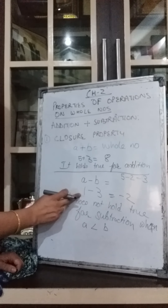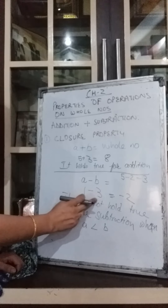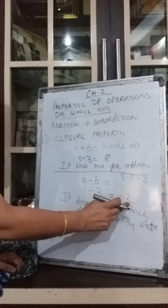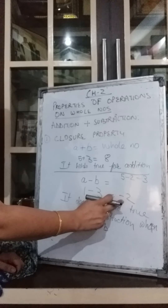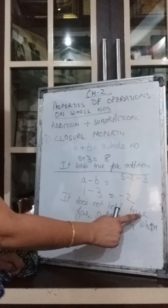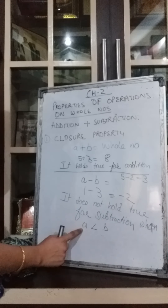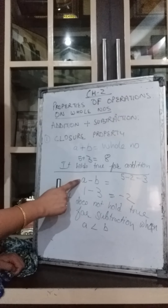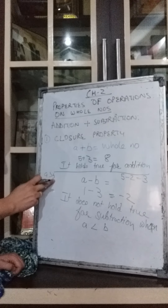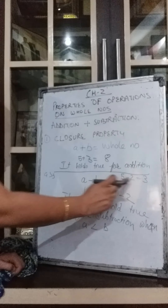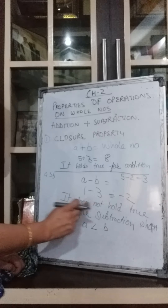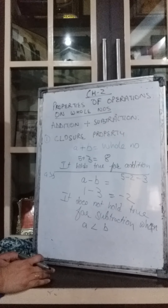But what about this case? Suppose A is 1 and B is 3. 1 minus 3 gives minus 2. Minus 2 is not a whole number — it does not belong to the set of whole numbers. So closure property does not hold true for subtraction when A is smaller than B. When A is greater than B, then it holds true. But when A is smaller than B, it does not hold true for subtraction.